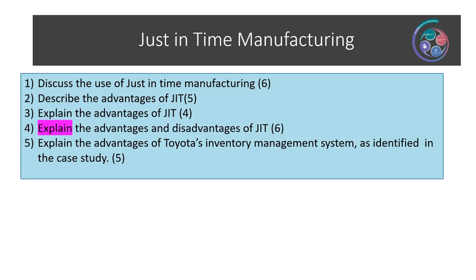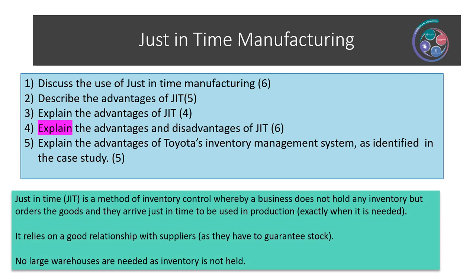The topic we're going to go over in operations is just-in-time manufacturing. Here are some questions you may get asked — it comes up as describe, discuss, and explain, and it could also be from the case study. Just-in-time is often called just-in-time manufacturing, but actually it's a method of inventory control or stock control whereby the business does not hold any inventory, but orders goods and they arrive just in time to be put into the production process — ordered exactly when they're going to be needed. So there's no stockpiling of inventory and no need for warehouses, but it does rely on a good relationship with suppliers because they must guarantee that stock arrives.